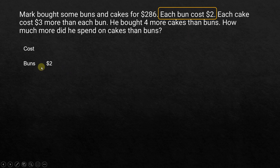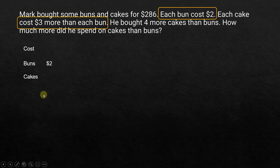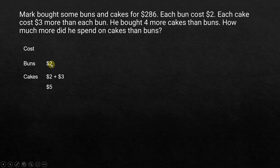Each bun costs $2. And each cake costs $3 more than each bun, which is $2 plus $3, so that's equal to $5. So for each cake he is spending $5, and for each bun he is spending $2. That's about the cost.